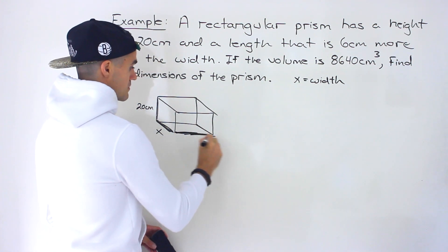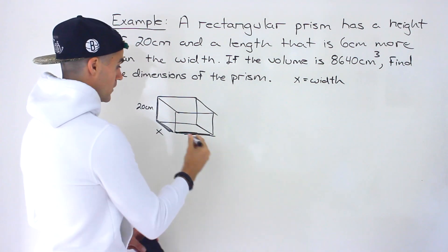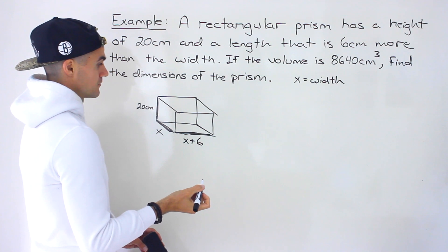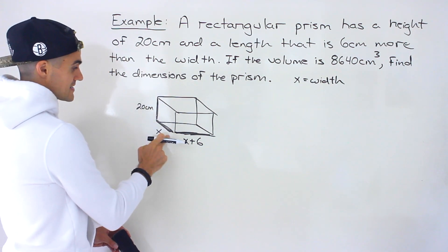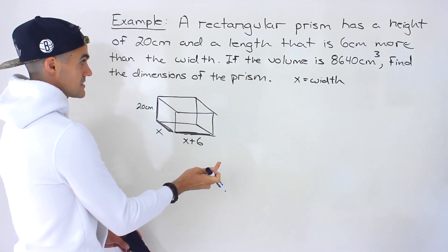So what's the length gonna be? Well it's gonna be 6 centimeters more than the width. So it's gonna be x plus 6 like that. So these are the dimensions. We have a height of 20, a width of x centimeters, and then we have a length of x plus 6 centimeters.